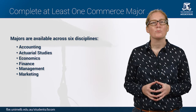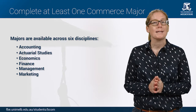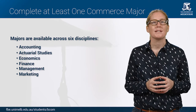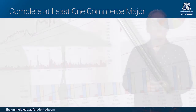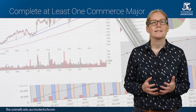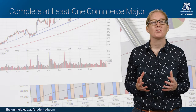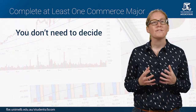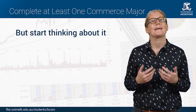It is not possible for you to combine actuarial studies with full accreditation and another major. Also, if you are thinking of pursuing an actuarial studies major you will need to start it from your first semester. If you are thinking about accounting you should enrol in an accounting subject in your first or second semester. The first year of your BCom is a great way to try some different subjects from each of the majors. You don't have to decide on your major in your first year, but it is a good idea to start thinking about it.